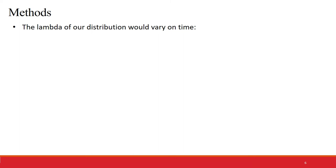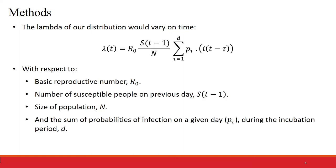The lambda in our Poisson distribution would vary on time. The first part of the lambda, the number of events, would be the R0 times the fraction of the susceptible population on the previous day. And the probability part of the lambda would be the sum of probabilities of infection on a given day during the incubation period.